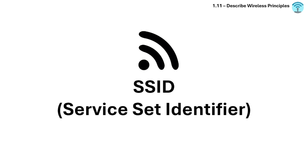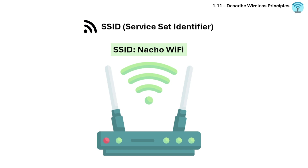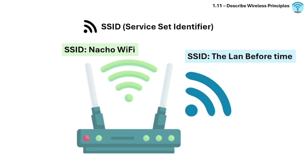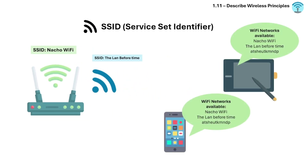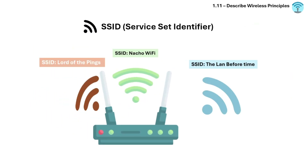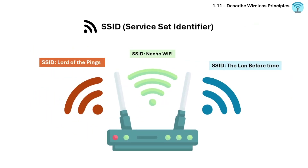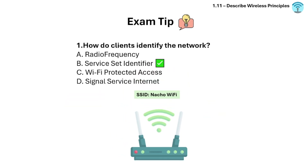Next is SSID. SSID is the name of a wireless network — it distinguishes one wireless LAN from another. Devices use SSID to join a wireless network. Routers or access points can be configured with multiple SSIDs for different purposes, for example a guest network versus an internal network. Exam tip: if asked how clients identify the network, look for SSID as the correct answer.